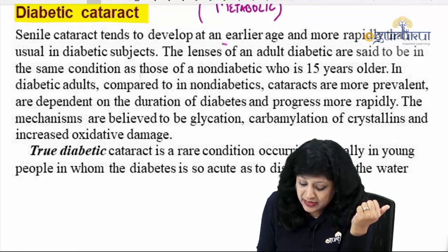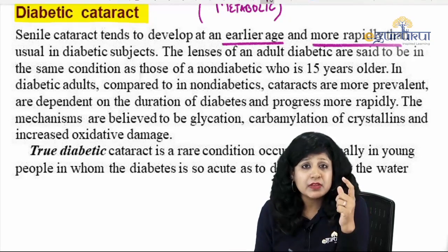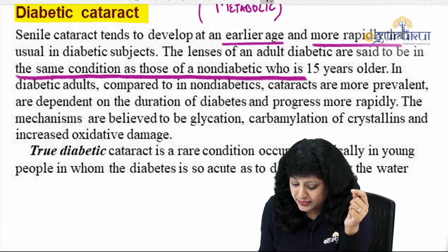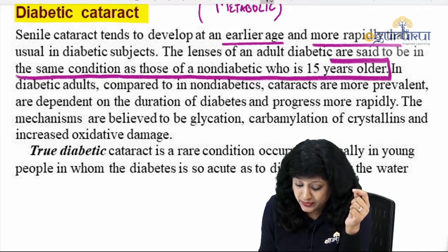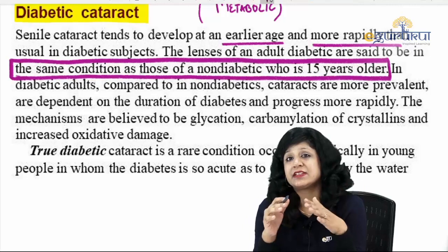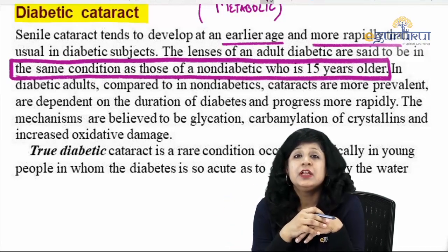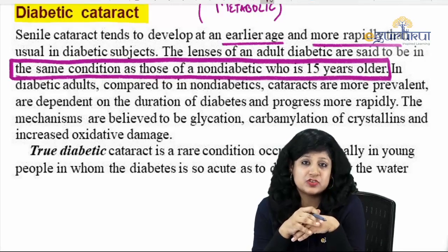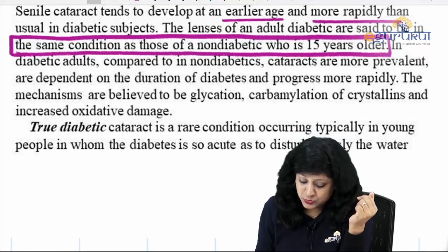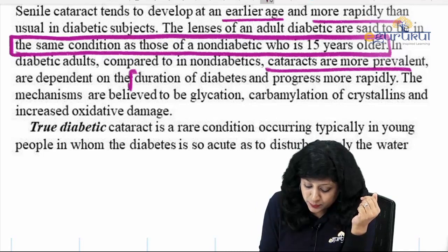Senile cataract tends to develop at an earlier age and more rapidly in diabetics. The lenses of adult diabetics are said to be in the same condition as those of a non-diabetic who is 15 years older. Diabetics have accelerated aging changes and can develop presenile cataract. In diabetic adults compared to non-diabetics, cataracts are more prevalent, and it depends on the duration of diabetes.